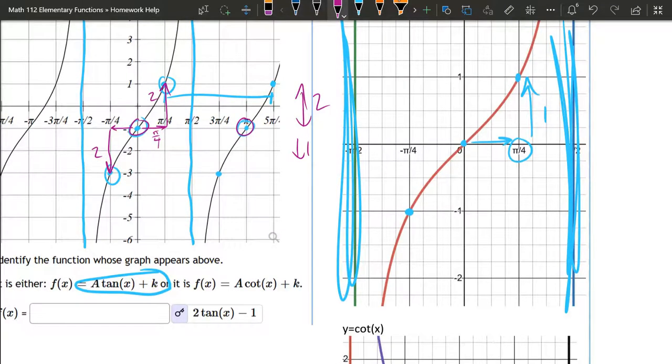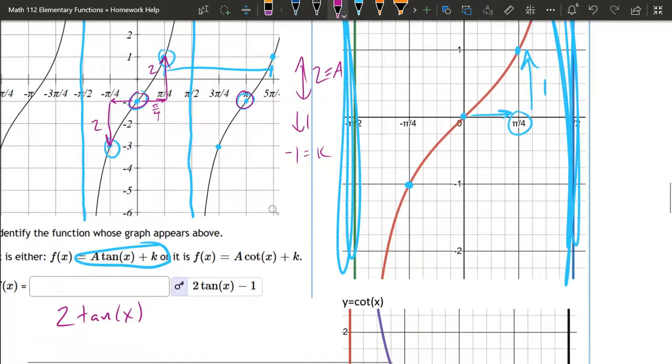So the a is the stretch, and the k is the shift. And we're going down 1, so that's actually not k. k is down 1. Negative 1 will equal k.